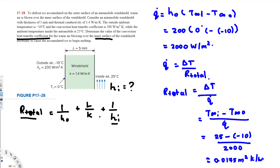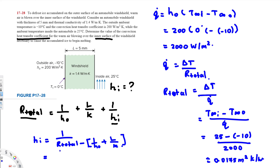Now that we have R_total, we can rearrange the thermal resistance equation to find h_inside. Rearranging gives: h_inside equals 1 over the quantity R_total minus 1 over h_outside minus L over K. Plugging in values: 1 over R_total is 1 over 0.0175, minus 1 over h_outside which is 1 over 200, and L over K is 0.005 meters divided by 1.4 watts per meter Kelvin.